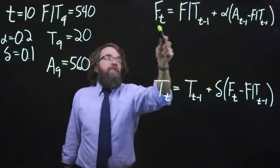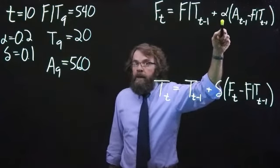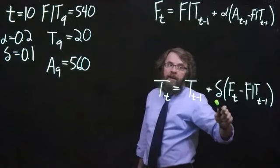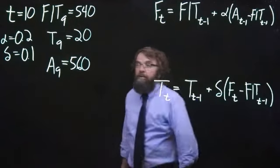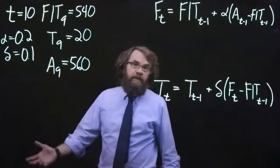To update the level, we need to know our first smoothing constant, alpha, and then to update the trend, we need our second smoothing constant, delta. That's why we have two smoothing constants, hence the name double exponential smoothing.